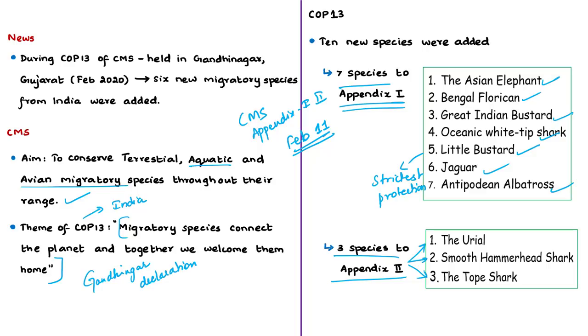The three species added to Appendix 2 are the Uriel, smooth hammerhead shark, and the tope shark. Appendix 2 covers species that have an unfavourable conservation status, and if a species is added to this appendix, it would benefit from international cooperation and conservation actions.